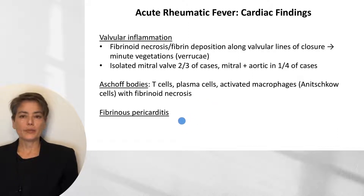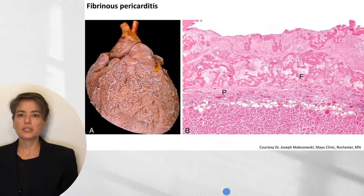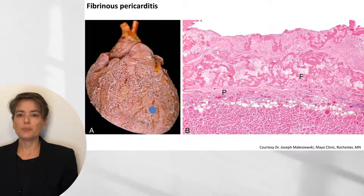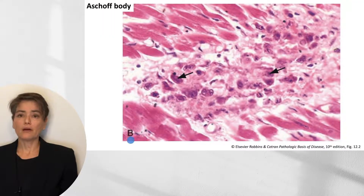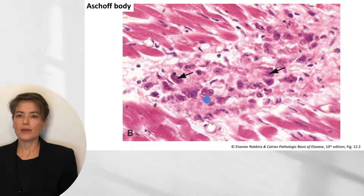Another finding we can see both grossly and microscopically is fibrinous pericarditis. This should be a reminder from the patterns of inflammation video, where we can appreciate fibrinous pericarditis with fibrin deposition at the pericardium and underlying muscle. More specific to rheumatic heart disease is the Aschoff body, which is pathognomonic for acute rheumatic fever. You can see these activated macrophages as well as caterpillar-shaped cells.